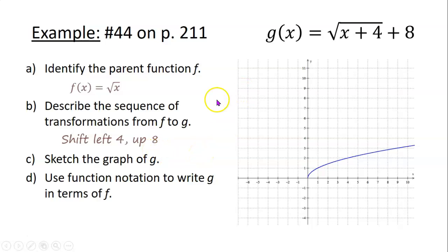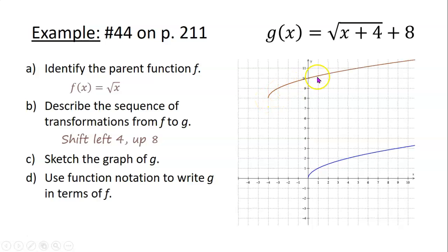Now to sketch the graph of g, we'll do what we just said to do. We'll take the graph of f here and we'll shift everything left 4 and up 8. So it's going to still look like this. But instead of starting from 0, 0 and then sort of going up from there, we shift 4 to the left, up 8. It's going to start here at -4, 8 and go up from there. So there's the graph.